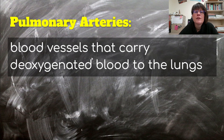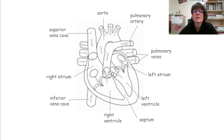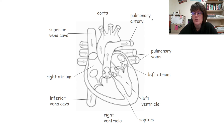The right ventricle sends blood to the lungs via the pulmonary arteries. The pulmonary arteries are blood vessels that carry deoxygenated blood to the lungs. So our path so far is: right atrium, right ventricle, to the pulmonary arteries going to the lungs. Whenever you see the word 'pulmonary,' that has to do with the lungs.